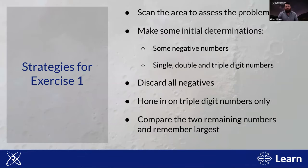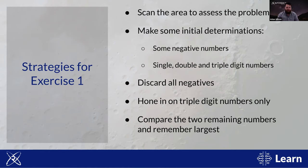You probably identified pretty quickly that the largest number was 134. More importantly, what did you do to get there? If you're anything like us, you probably scanned the whole space to quickly assess the problem, making initial determinations — some negative numbers, some positive; single, double, and triple digit numbers. Given these facts, you probably ignored everything with a minus sign immediately and focused only on the three-digit numbers. This effectively reduced the problem to identifying which of the two remaining three-digit numbers was the largest.